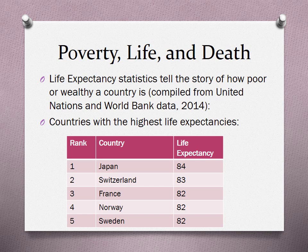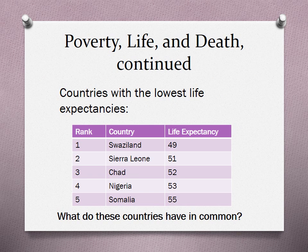With universal health care, if you break your leg, if you have a cough, if something doesn't feel right, you can go to the doctor and not have to worry about extremely high bills. On the other hand, the countries with the lowest life expectancies — Swaziland, Sierra Leone, Chad, Nigeria, and Somalia — have life expectancies ranging from 49 to 55, considerably lower.